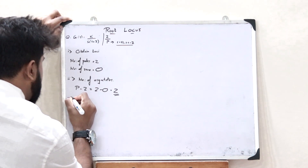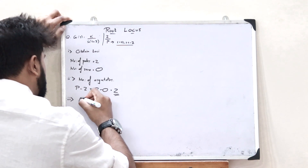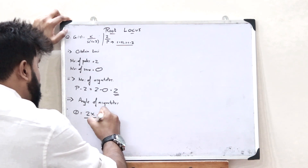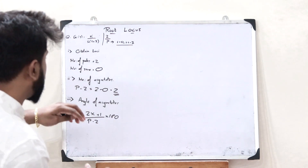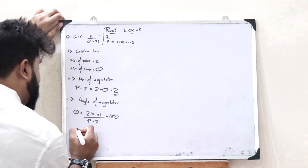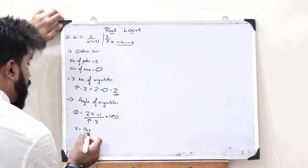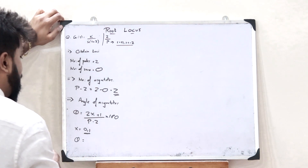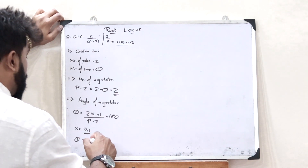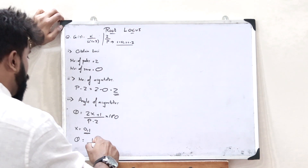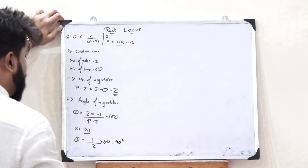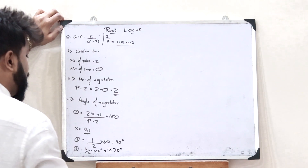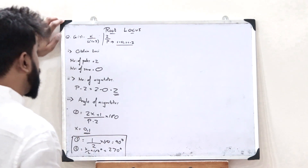In Step 3 we find the angle of asymptotes. The formula is θ = (2x+1)/(P−Z) × 180°, where x is the asymptote index. Since there are two asymptotes, x=0 and x=1. For x=0: θ = (1/2)×180° = 90°. For x=1: θ = (3/2)×180° = 270°. So the two angles of asymptotes are 90° and 270°.